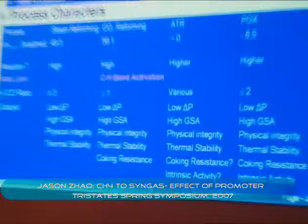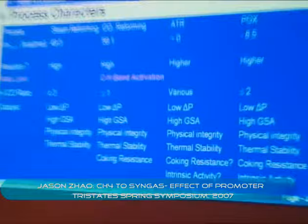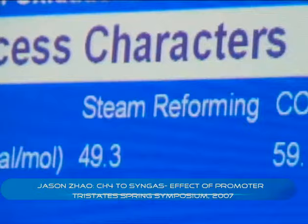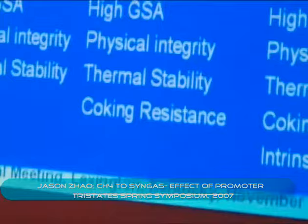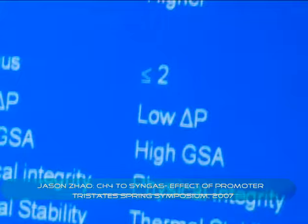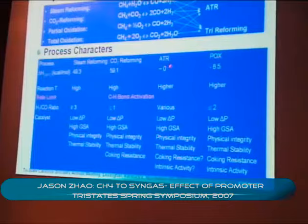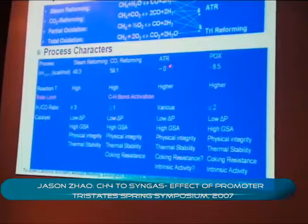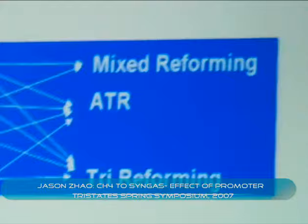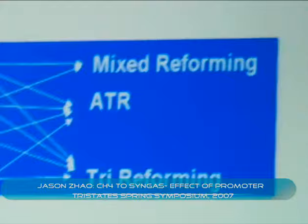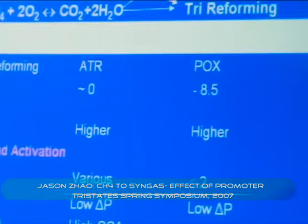People can also play with combinations of these, and they end up with autothermal reforming. But for all these reactions, the common thing is that the rate limitation is actually the C-H bond activation. For steam reforming or CO2 reforming, because of the large heat effect, you cannot fully utilize the activity of the catalyst. But with autothermal reforming or catalytic partial oxidation, you have a close-to-neutral process, and you can fully utilize your catalyst activity.